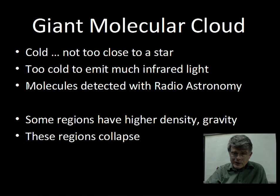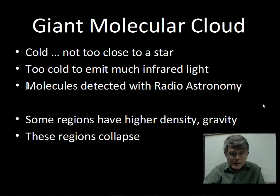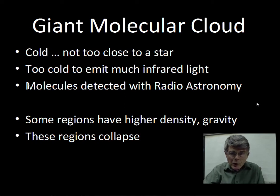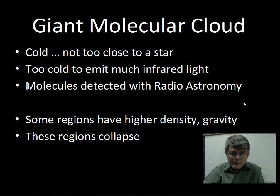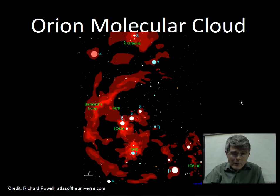Gravity can win in regions where the density is high enough and they start to collapse. These giant molecular clouds — a hundred thousand times the mass of the Sun is not out of the realm. They're cold, with some regions that are more dense, and in those more dense regions gravity causes the gas to contract, to form a tighter knot of higher density. That's the start of this gas on its way to becoming a star.